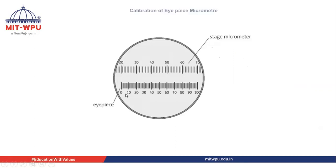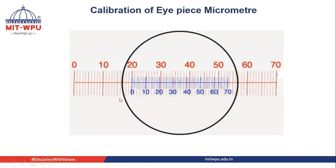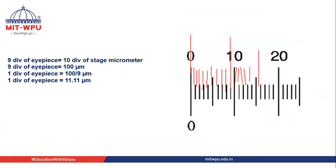If we look through the eyepiece, we can see both the eyepiece micrometer and the stage micrometer. The next step is to calibrate the eyepiece micrometer. We superimpose the first line of the eyepiece micrometer scale — represented in blue — with any line of the stage micrometer scale, shown in red. Here, I have superimposed the zero line on the 20th division of the stage micrometer. Once they are superimposed, we look for the next line where both scales coincide.